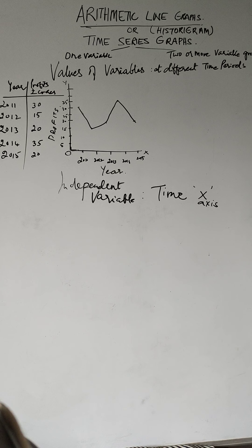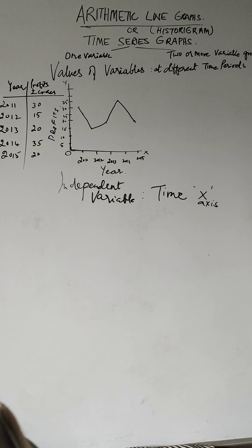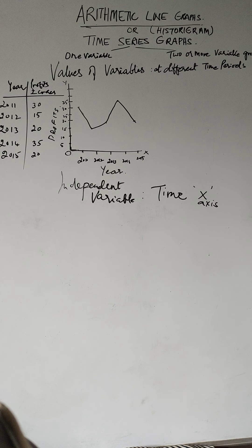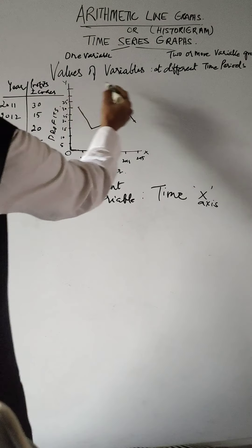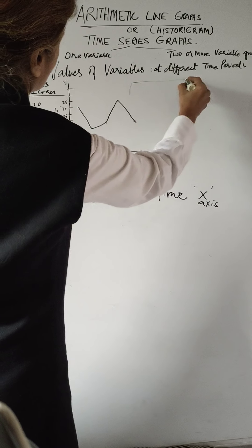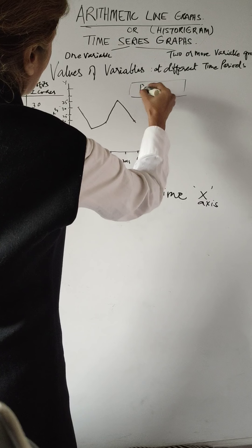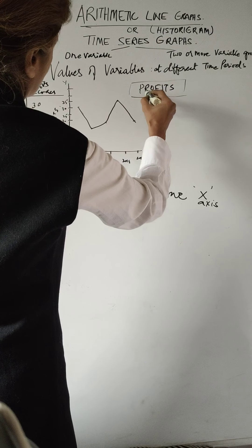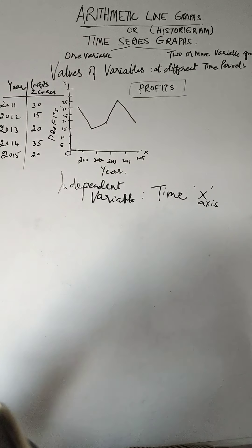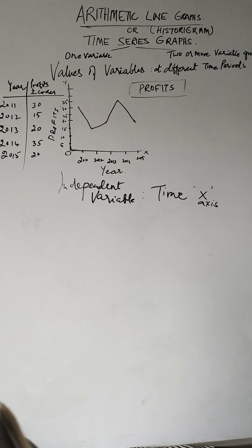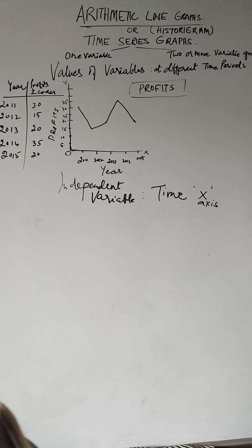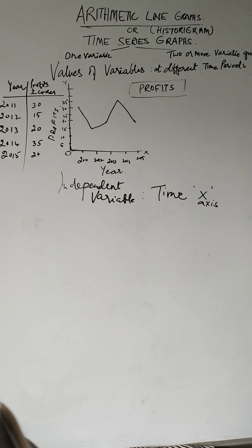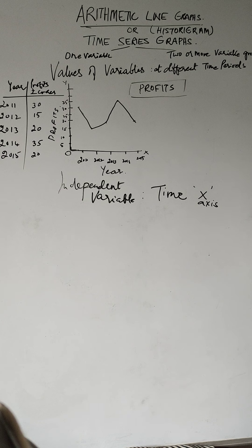Every graph must have a suitable title. Can you think of a suitable title here? What is the title that I should give? I can write profits of a firm - profits of a given firm that you're talking about. That is how it is.